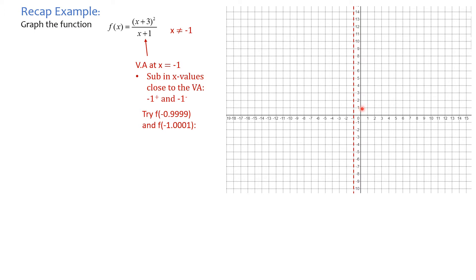I'll do the same on the left-hand side of the asymptote — you can get out your calculator and substitute those numbers in. The proper way to write that: as x approaches negative 1 from the right-hand side, subbing in −0.999, I found that my y-value is approaching positive infinity.